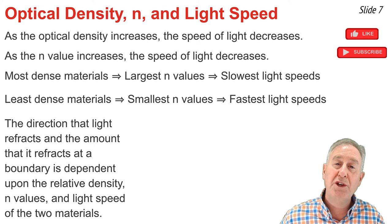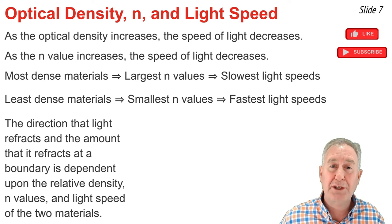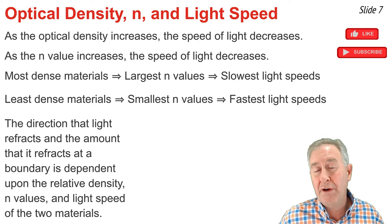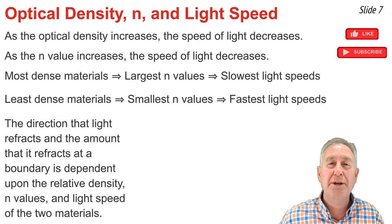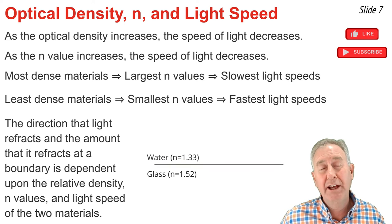The importance of this information is that it helps us predict the direction and amount of refraction that occurs at a boundary as light passes across. The direction and amount of refraction depend upon the relative values of the optical density, the index of refraction, and the speed of light.